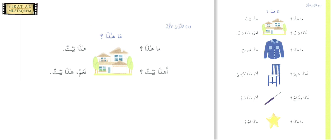This is interesting — here we learn 'ma haza.' We already learned 'haza' means 'this'; now 'ma' means 'what.' So 'ma haza' means 'what is this.' A golden rule: there is nothing for the word 'is' in Arabic. So 'ma haza' — literally 'what this' — means 'what is this.' Then the answer: 'haza baitun' — this is a house.